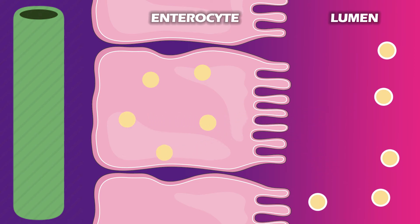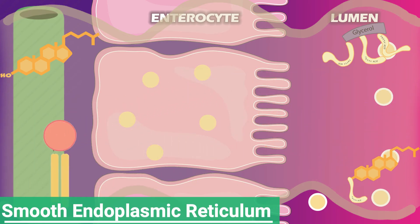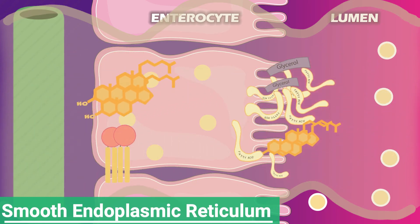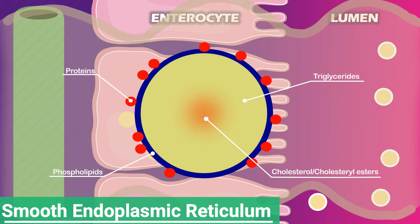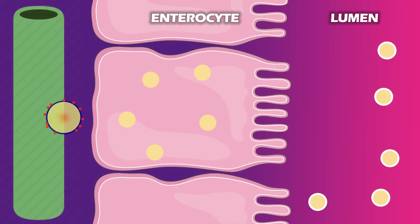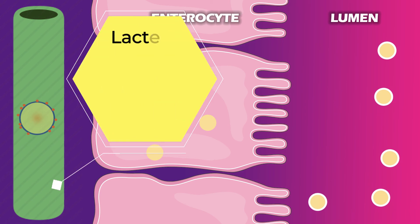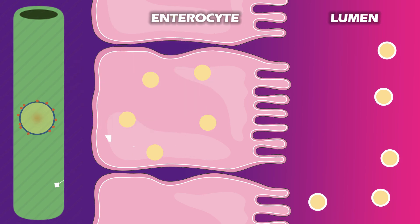Inside the enterocytes, these are re-synthesized into their parent products — cholesterol, triglycerides, cholesterol esters, and phospholipids — and then packed into small lipoprotein particles known as chylomicrons. The lipid part of the chylomicron forms the envelope, while the protein component is for recognition by receptors of the cells that will engulf them. These chylomicrons are then absorbed into the lymph vessels in the intestine known as lacteals, and the lymph drains them into the main circulation via the large veins.